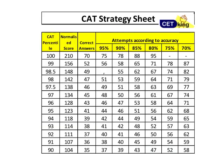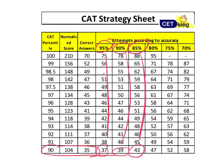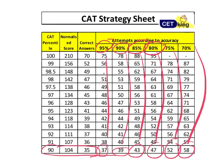To score 90 percentile you need 35 marks. If your accuracy is 95%, then you need to attempt 37 questions. At 90% accuracy, attempt 39 so you can afford 4 wrong. For 85 percentile attempt 43, for 80 percentile attempt 47, for 75 percentile attempt 52, and for 70 percentile attempt 58.